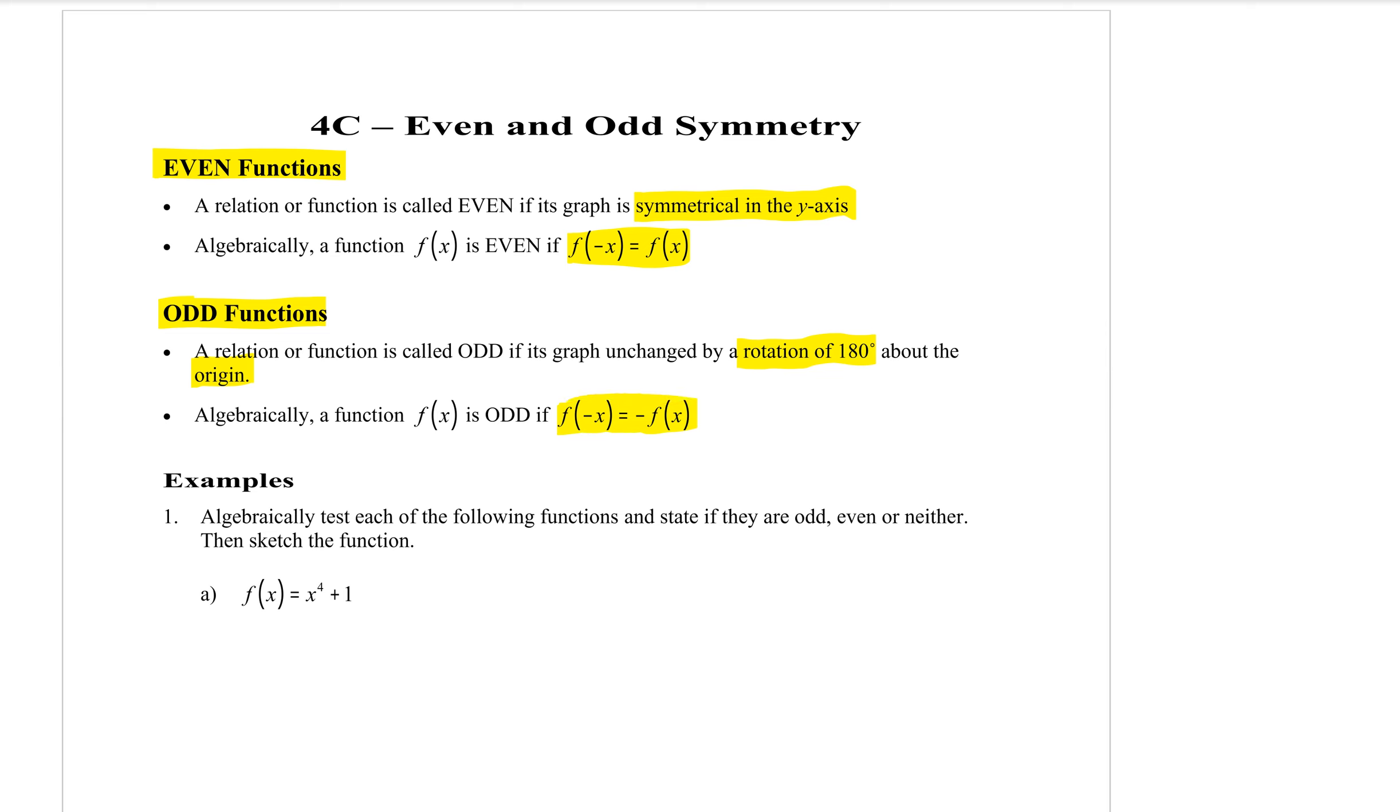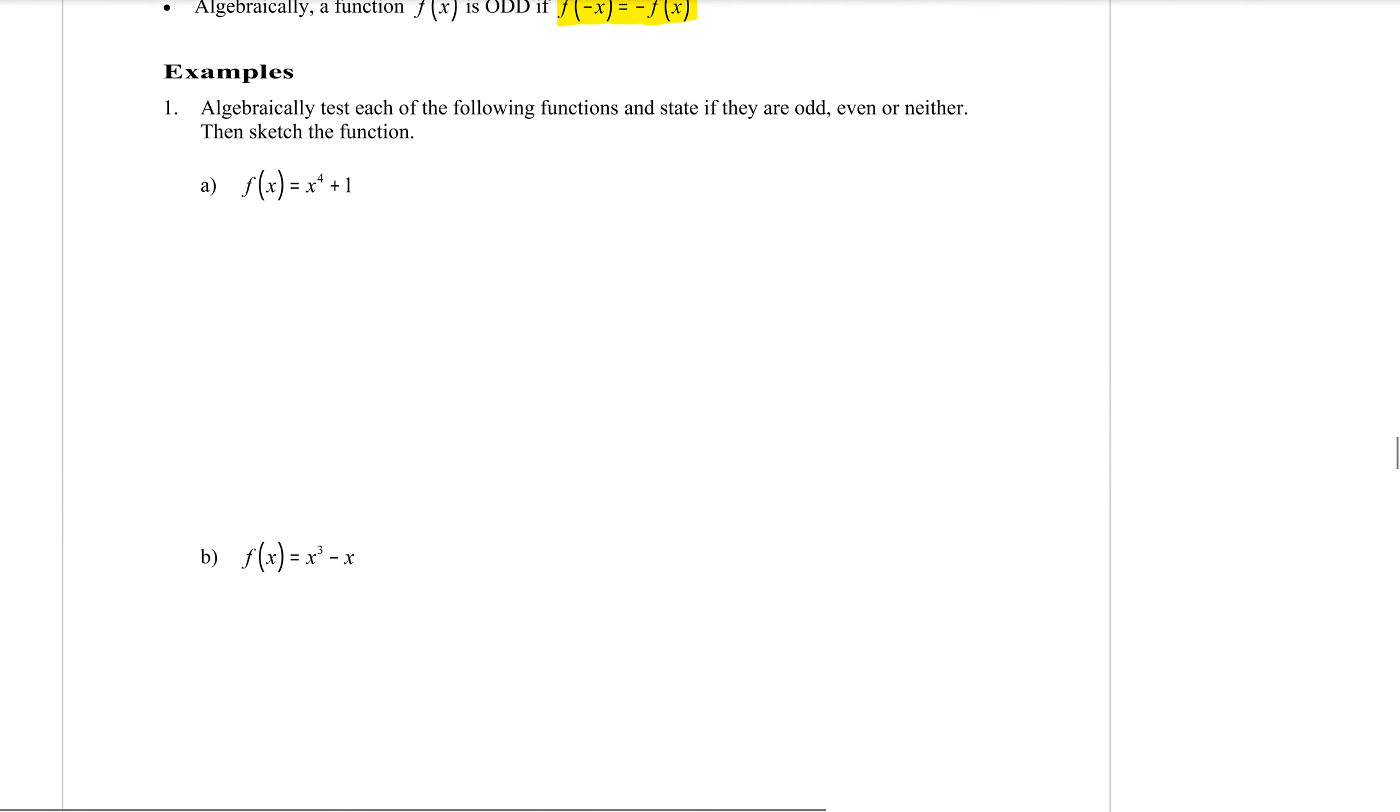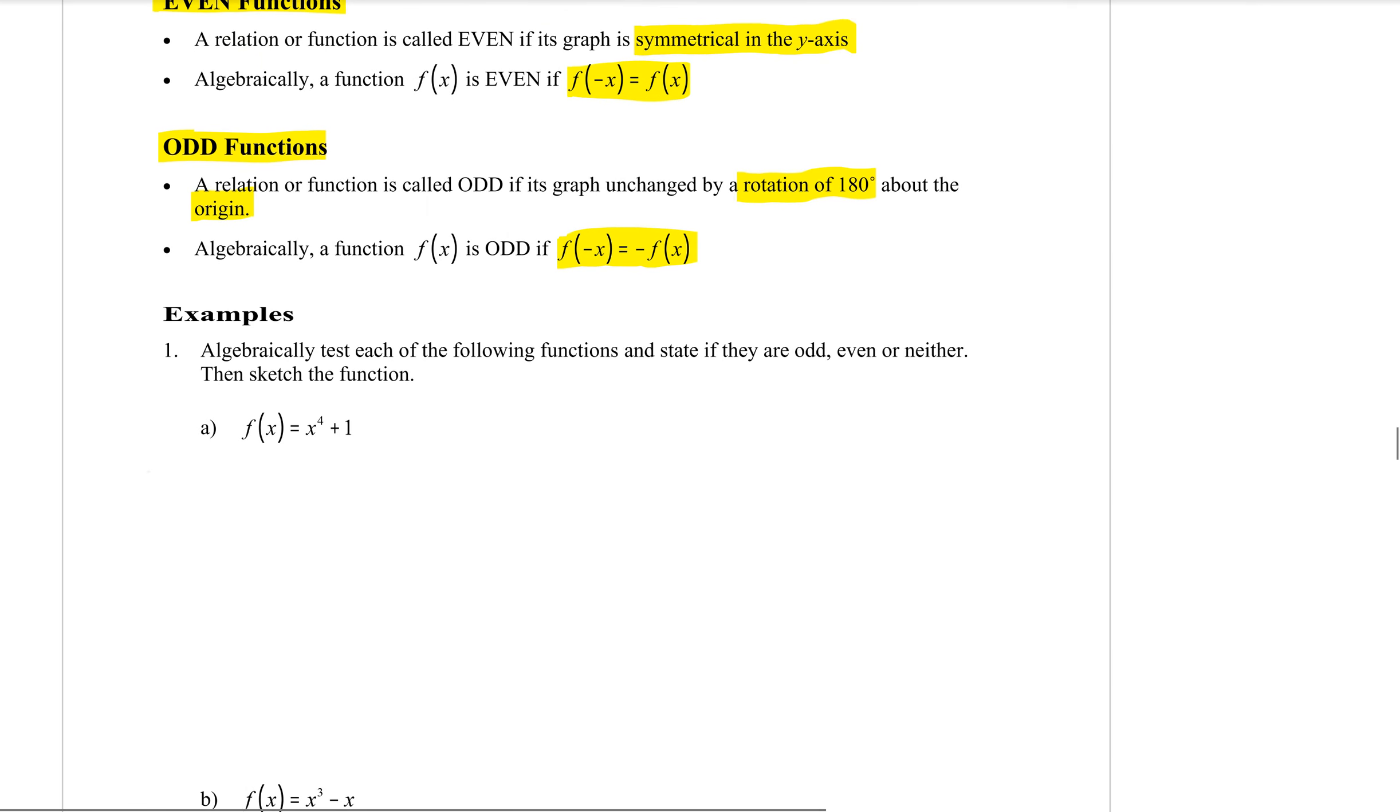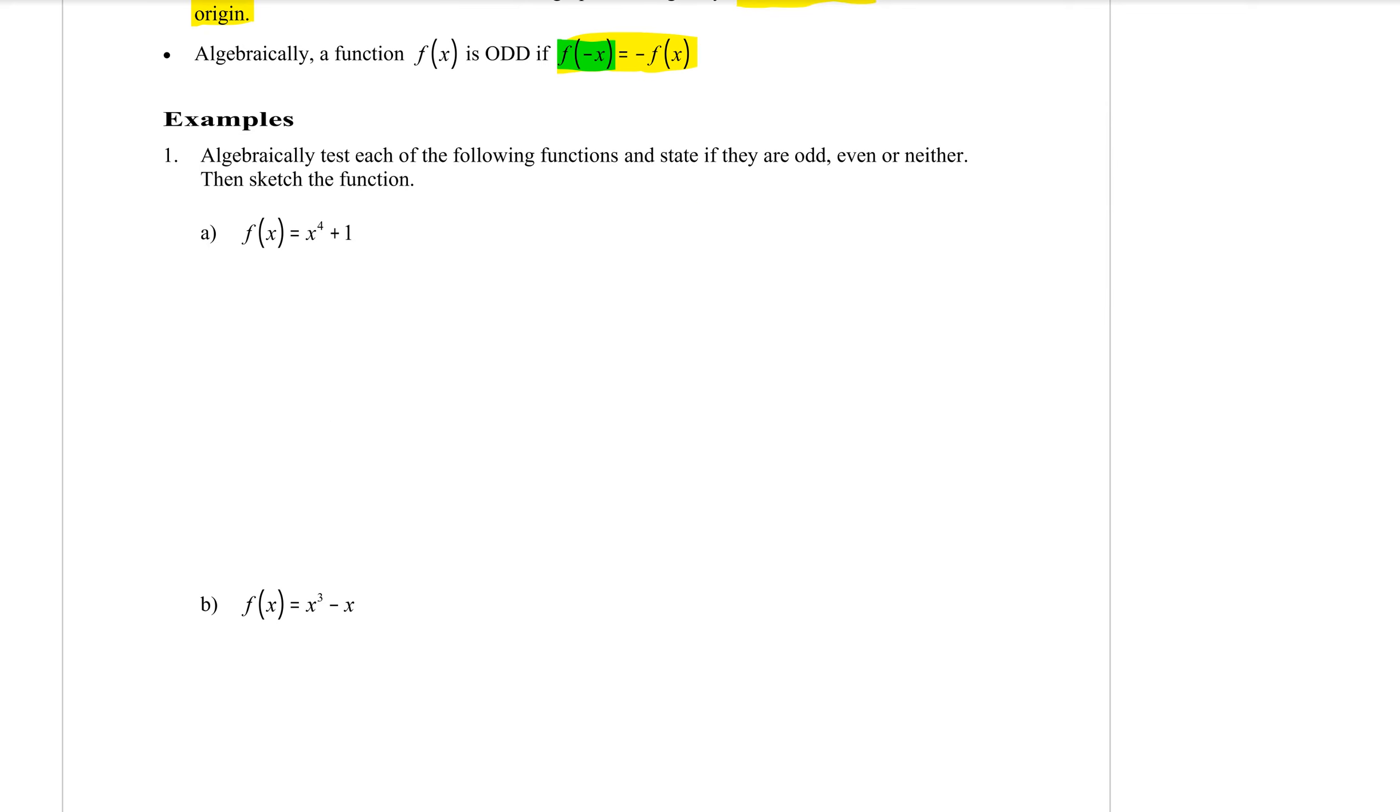So let's practice showing algebraically whether something is an odd or an even function or neither. Question number one says algebraically test each function and state if it is odd or even or neither and then sketch the function. For both types of equations we had up here they both had f of negative x in them. If you start by always substituting that in you'll be able to get to either type of solution.